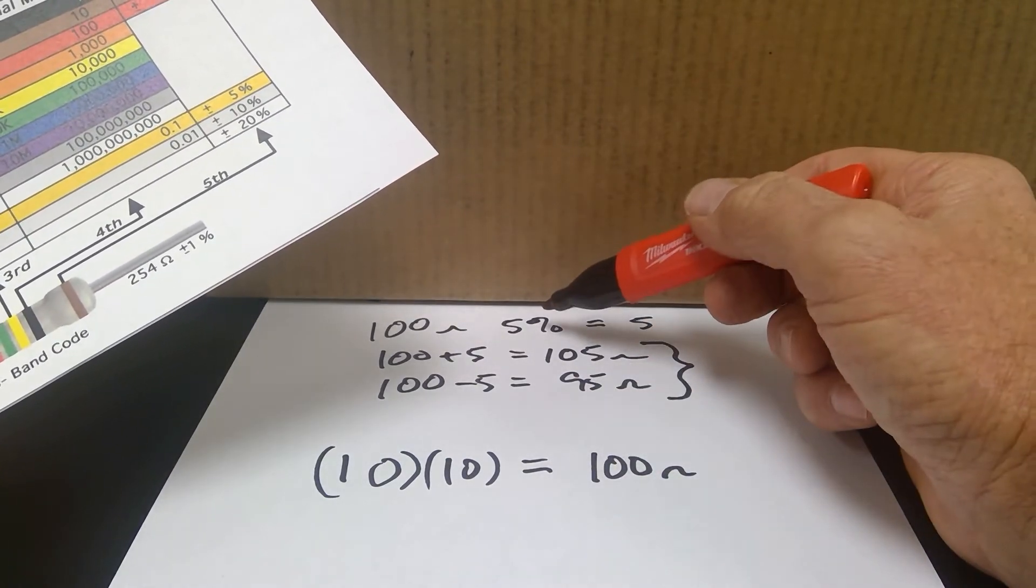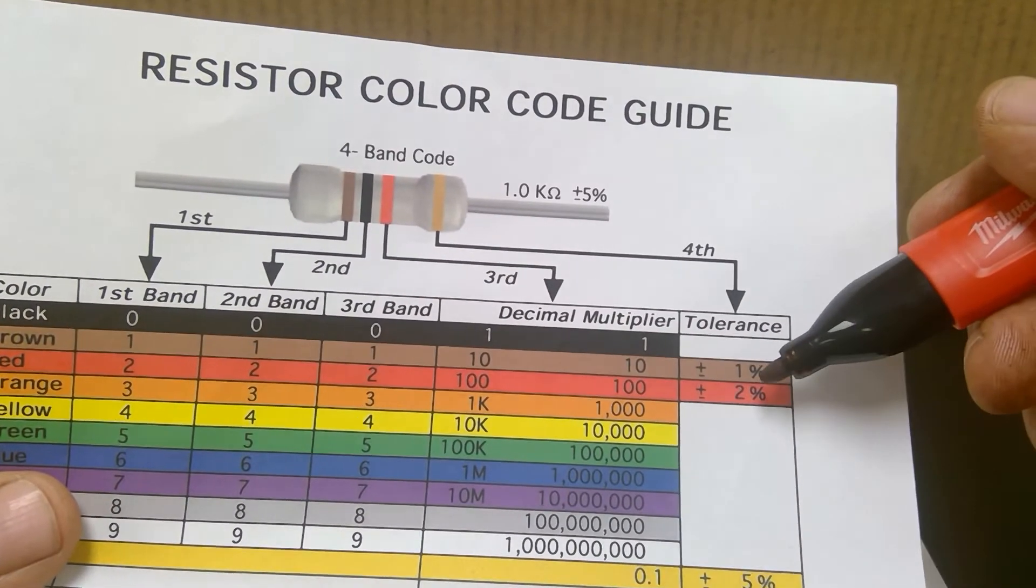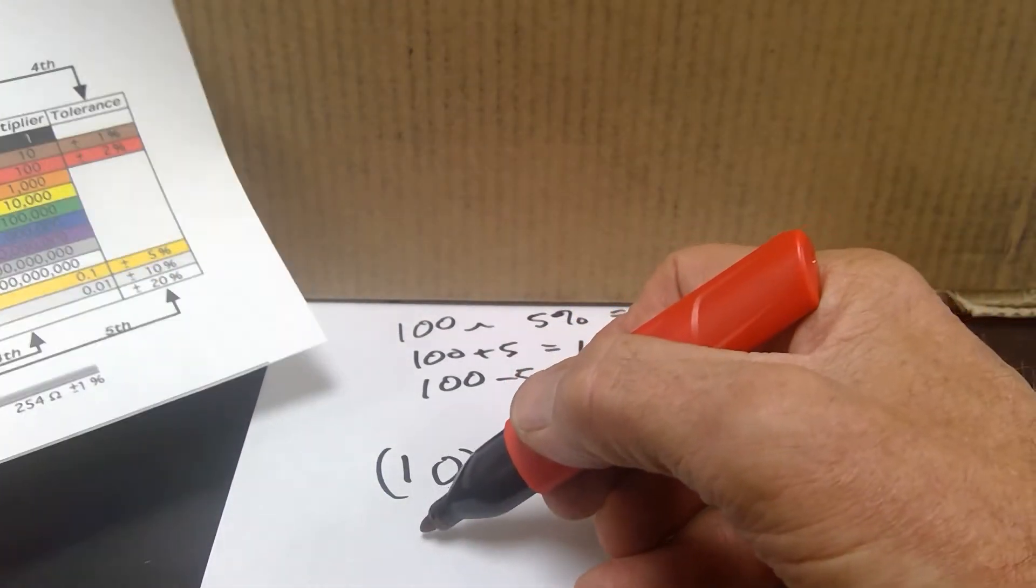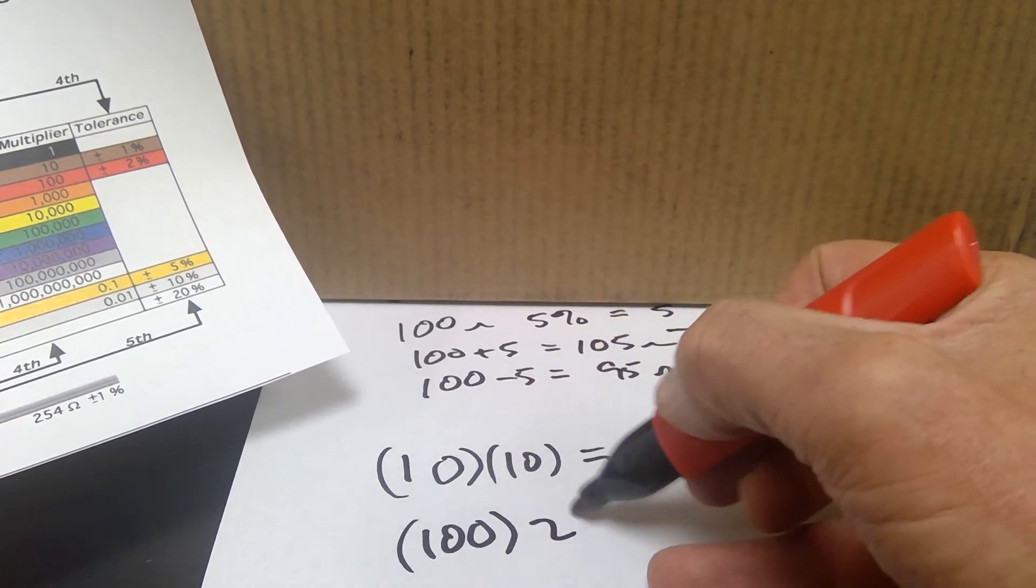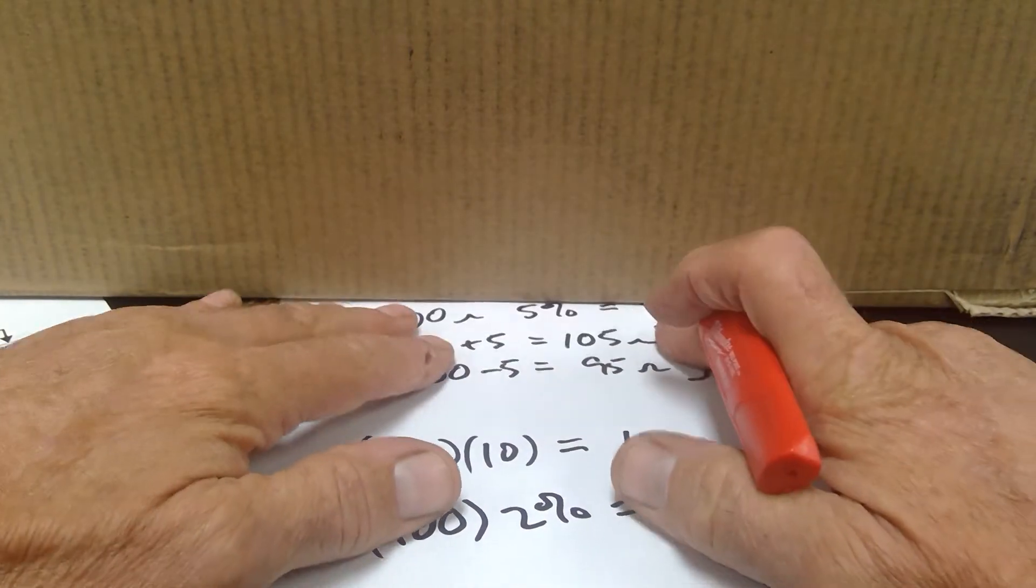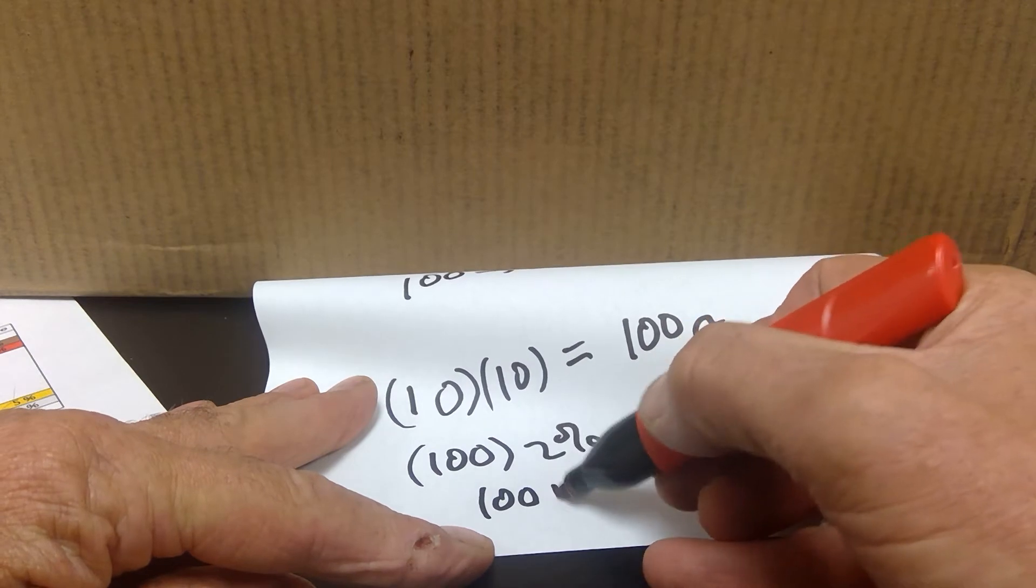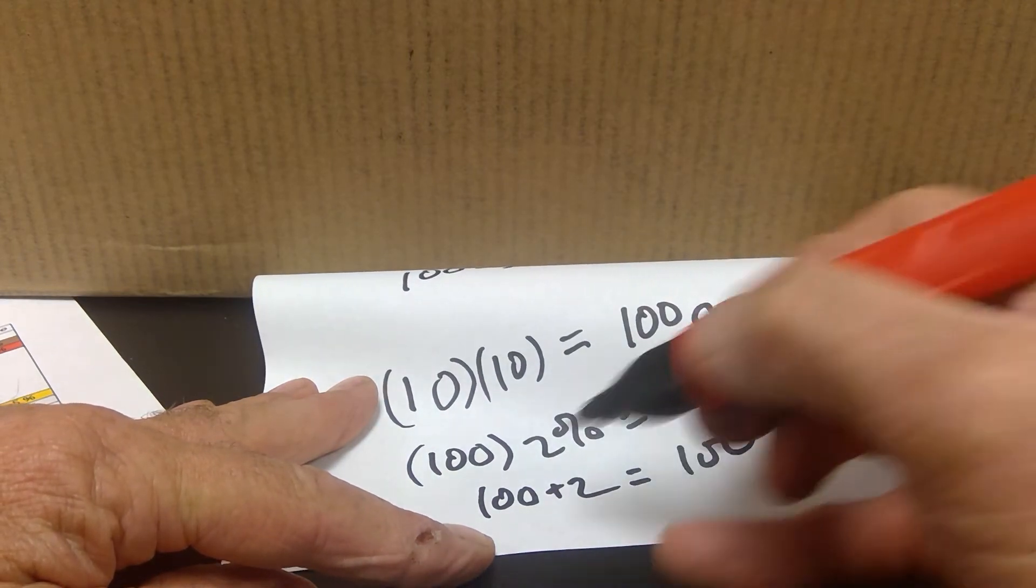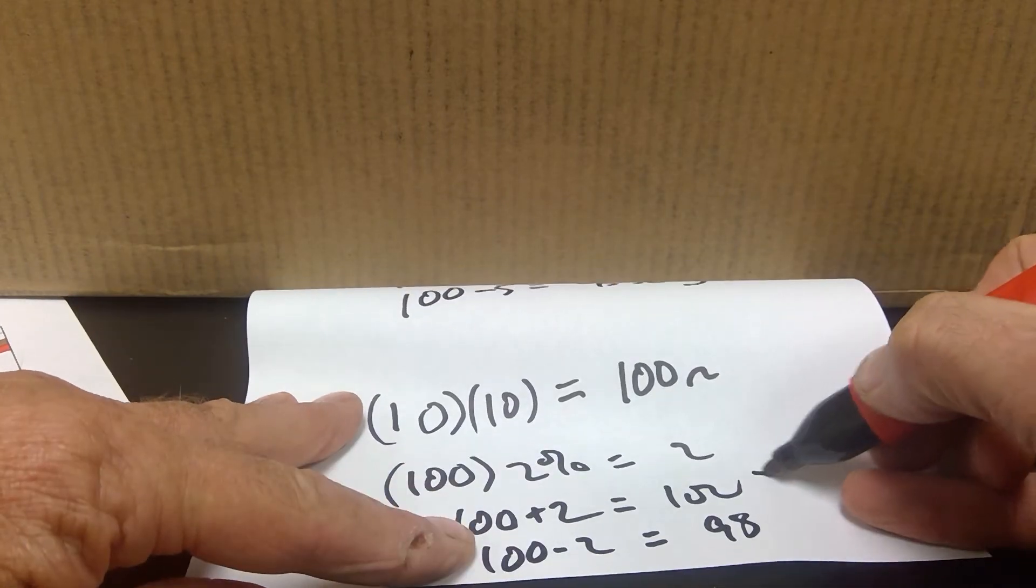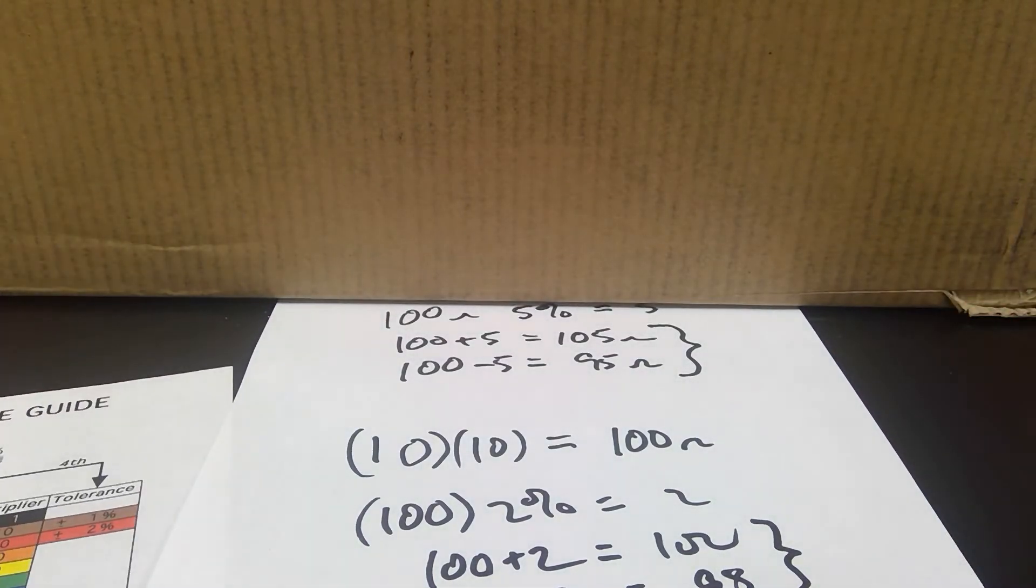And we already calculated the plus or minus 5 value. So let's just pretend like instead of gold, it was red. I'm going to go plus or minus 2%. So 100 times 2% equals 2. So now I have 100 plus 2 equals 102. 100 minus 2 equals 98. This would be the measured range or the tolerance for that resistor.